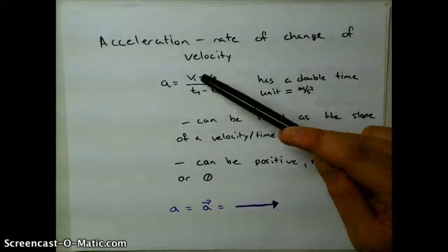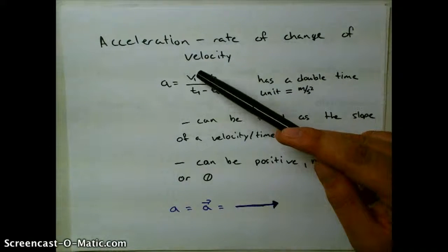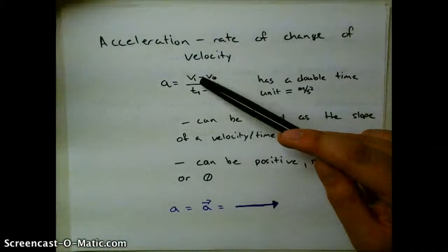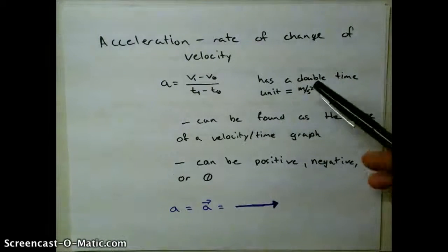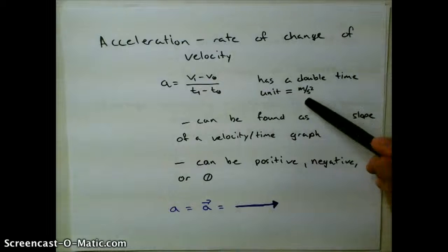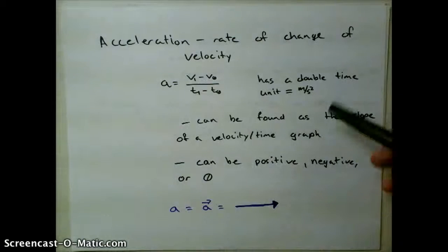Remember that velocity is already a distance time measurement. So if we take a distance time measurement divided by another time, then we're going to get a double time unit. So you can always identify acceleration by the double time unit, such as meters per second squared, or feet per second squared, or something along those lines.